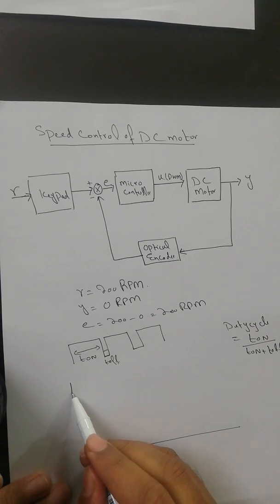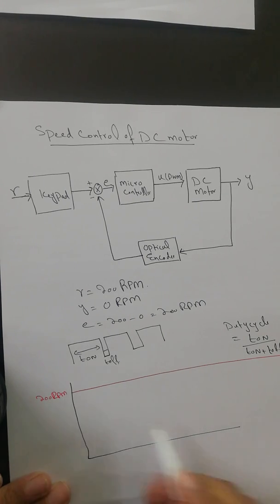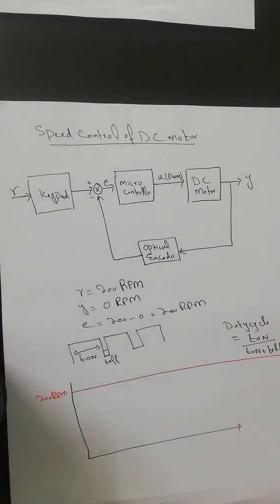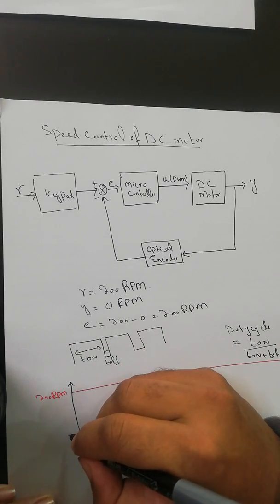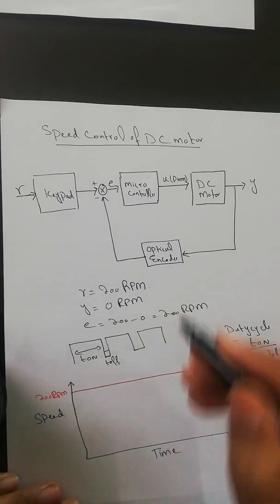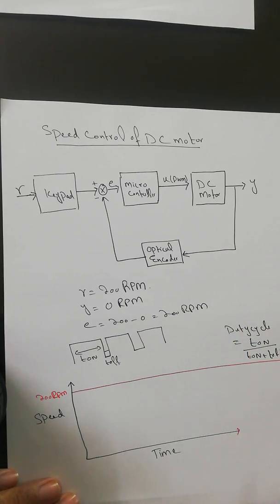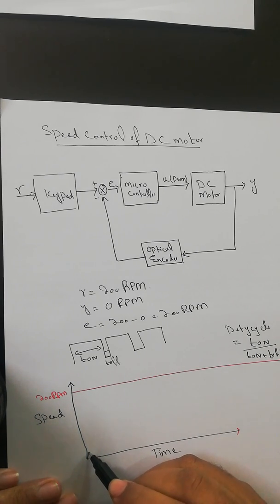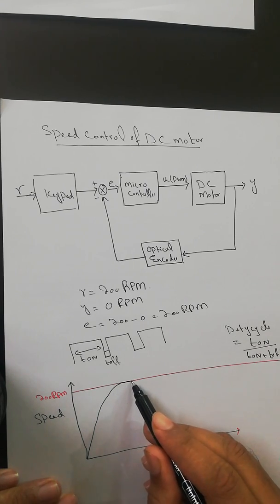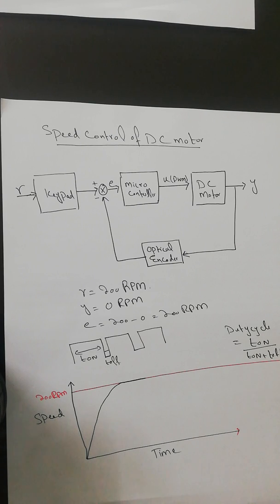Suppose you want the speed to reach 200 RPM — this is the desired level on the graph, where the y-axis is speed and the x-axis is time. Initially the error is 200 RPM, the microcontroller generates a PWM with increased duty cycle, the motor starts moving, and the speed starts increasing. The response is excellent — the transient response is excellent, the steady state response is excellent, and there is no steady state error. But suddenly you apply a load at a particular point on the DC motor.